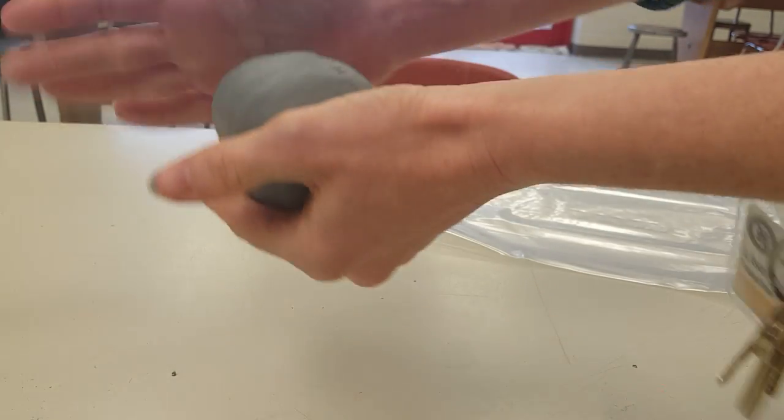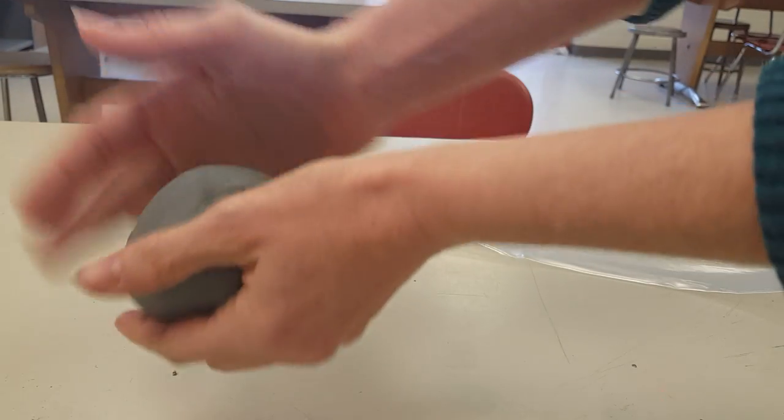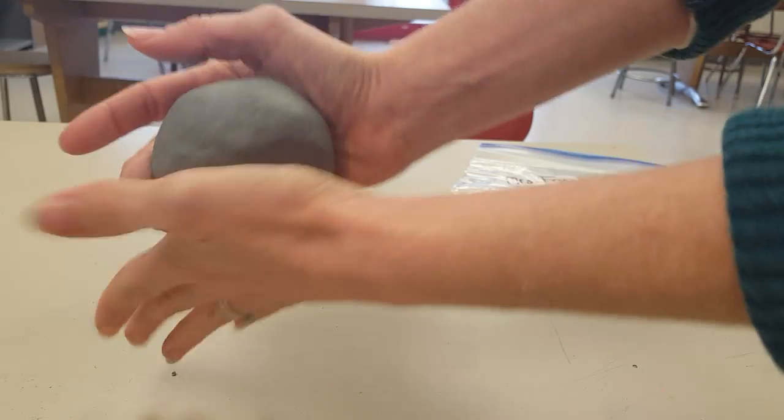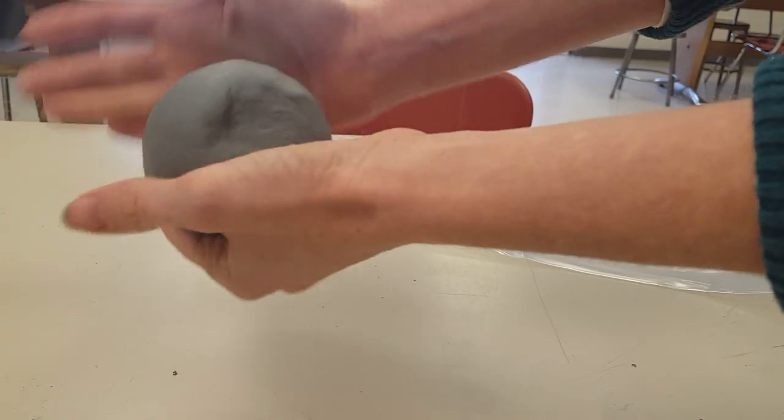This clay is pre-wedged, which means that it has no air bubbles in it, so when it goes into our kiln, which is the big oven we use to fire clay, it won't explode. Air bubbles tend to expand when heated, and the air bubbles will explode in the kiln if you have any.